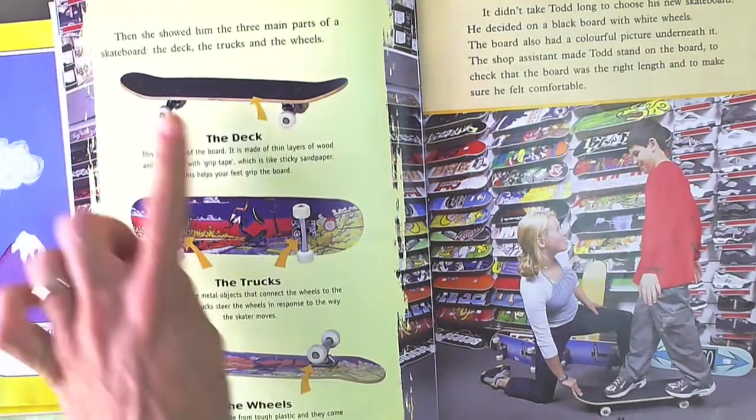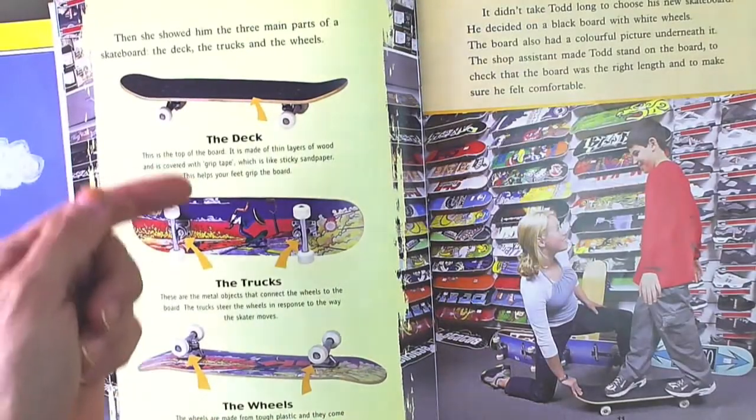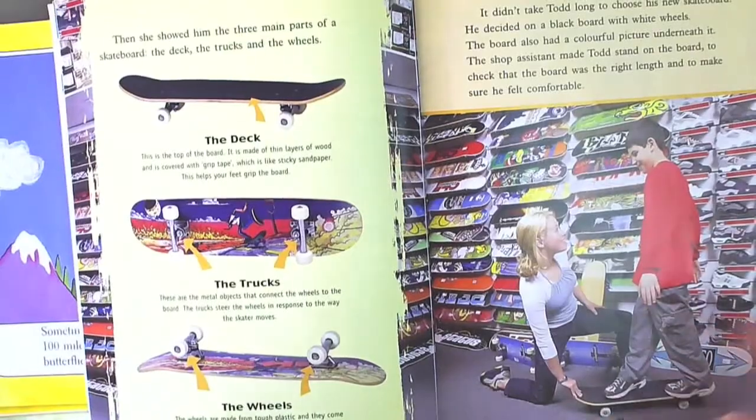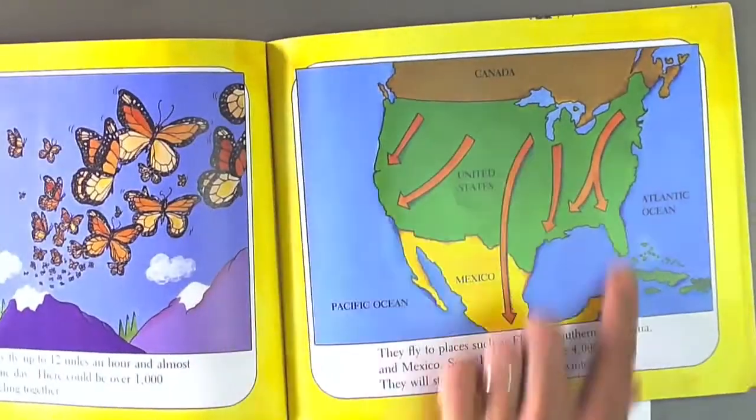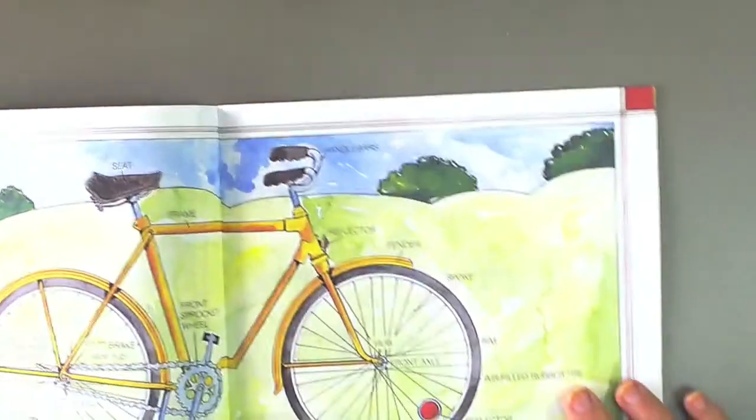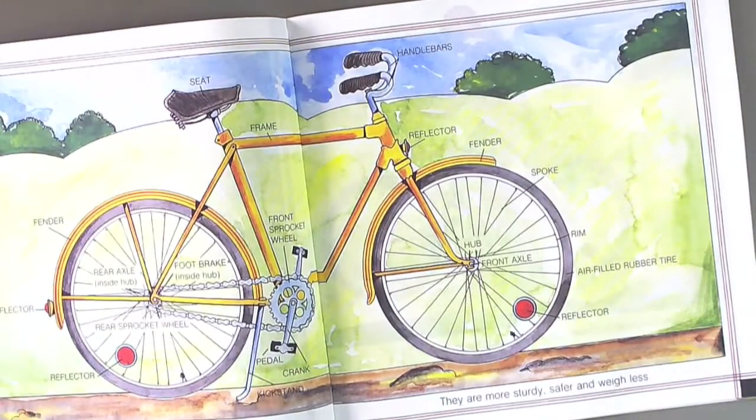I'm sure you've seen things like this in books before, where there are images and then some words to describe the image. So these are showing the different parts of a skateboard. Here we can see the movement of butterflies in this butterfly book. And here is a bicycle that has all of its parts labeled.